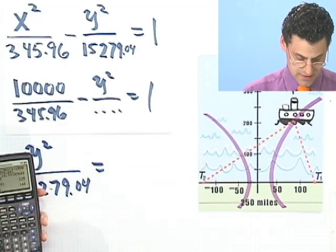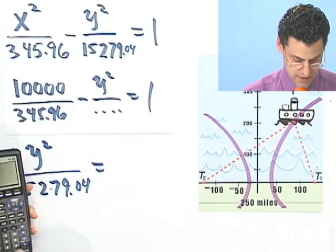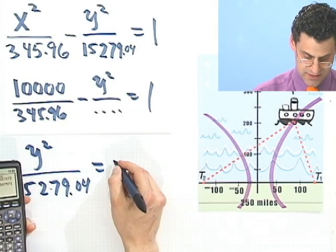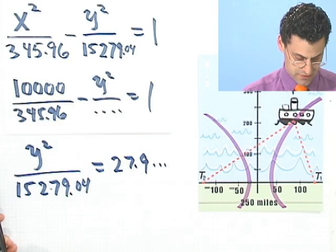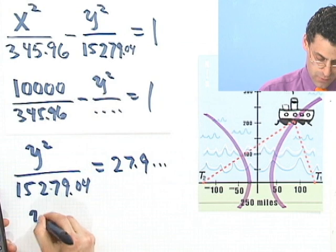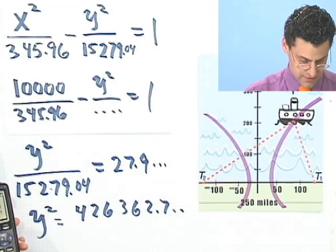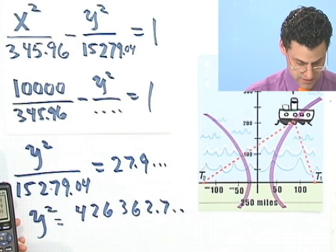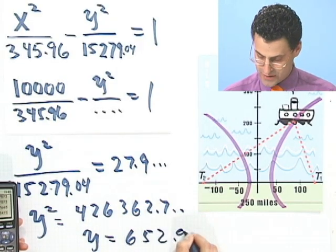I take 10,000 divided by 345.96, subtract 1, and that equals 27.9 something. Multiply that by 15,279.04, and y² equals around 426,362.7. Taking the square root, y equals 652.9 miles.